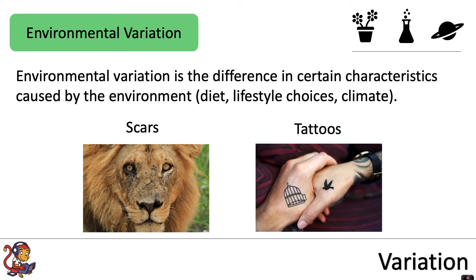Tattoos are also an example of environmental variation. You don't inherit these, you're not born with these. This is a lifestyle choice that you make, but this will make you different to others, and hence it's an example of a characteristic due to environmental variation and not inherited variation.